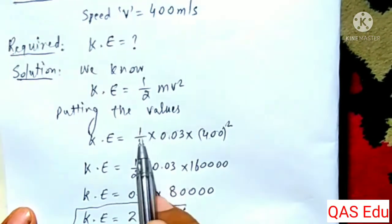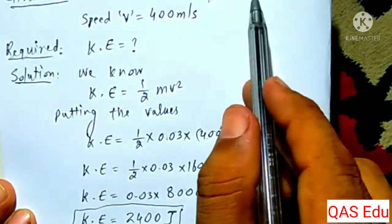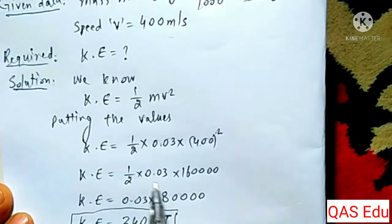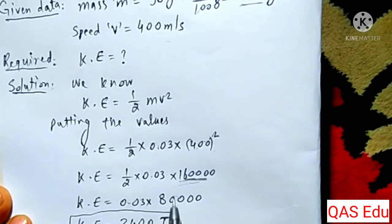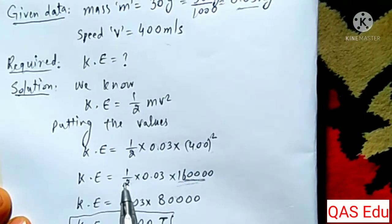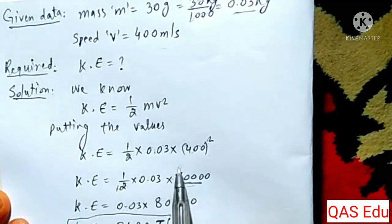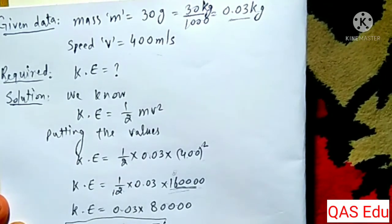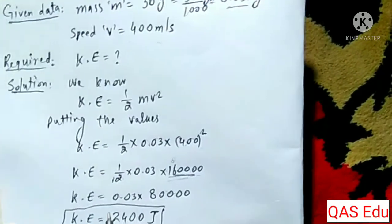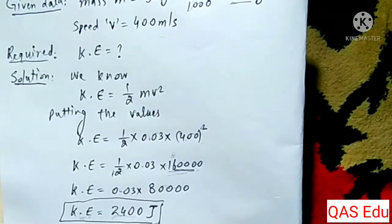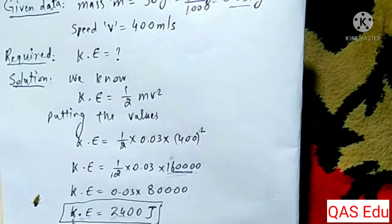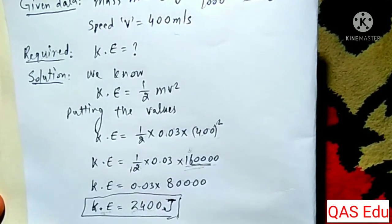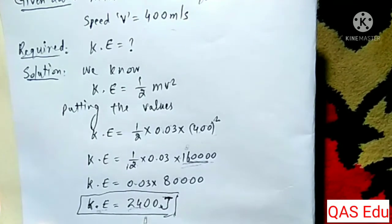Putting in the values: the formula is one-half, the mass is 0.03 kg, the velocity squared is 400 squared. 400 squared equals 160,000. The calculation gives a kinetic energy of 2,400 joules.